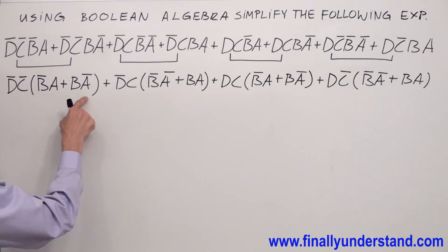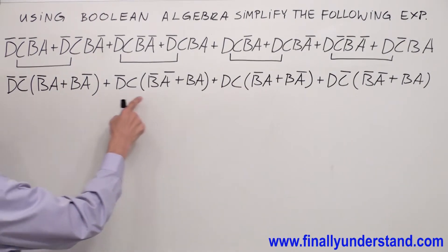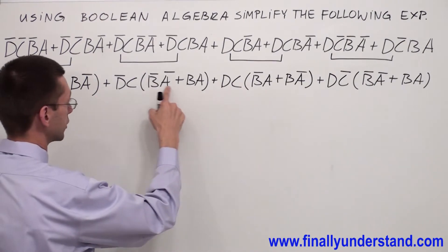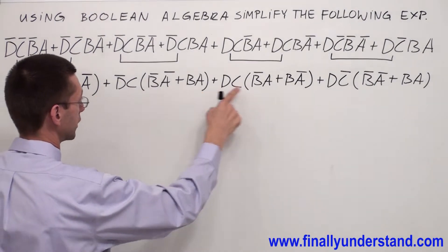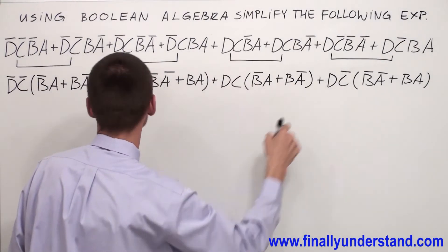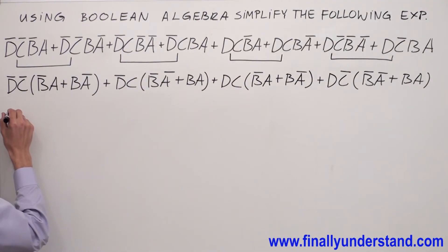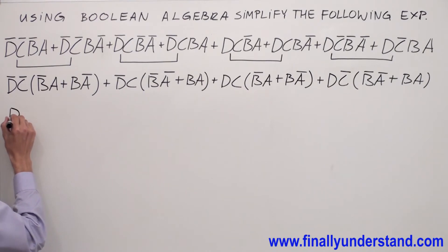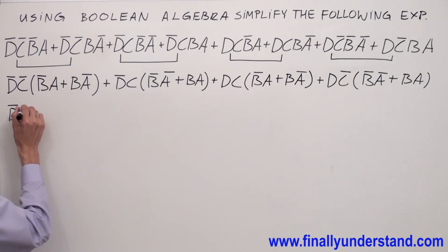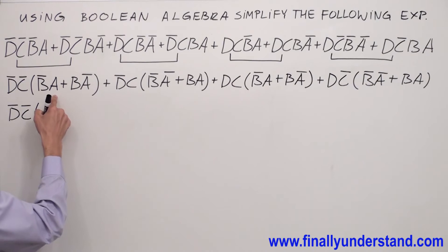You are recognizing that this is nothing else but exclusive OR. This is exclusive NOR, exclusive OR, and exclusive NOR. Let me rewrite this expression one more time. So I have D0C0, and this is exclusive OR.